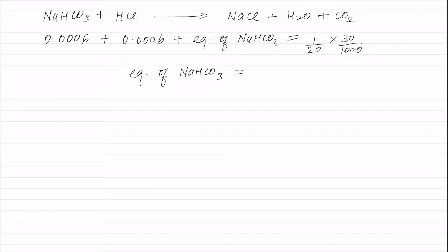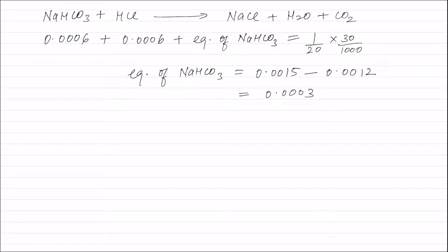Solving this equation, equivalence of NaHCO₃ present originally in the mixture = equivalence of HCl used (0.0015 equivalence) minus 0.0012. This 0.0012 equivalence is the sum of sodium carbonate present in the solution and NaHCO₃ produced from sodium carbonate. This equals 0.0003 equivalence, which is the equivalent of NaHCO₃ present in 25 ml of solution.